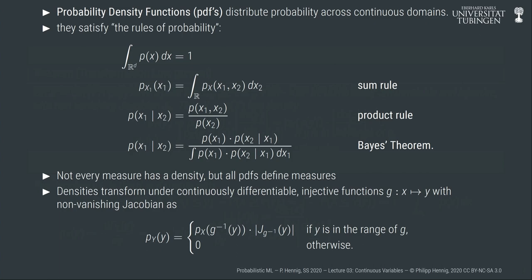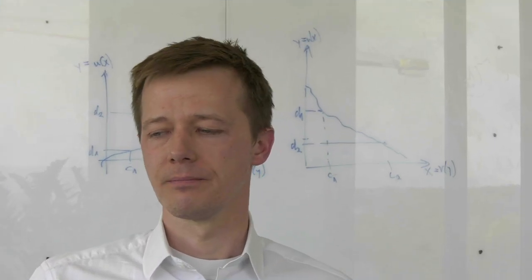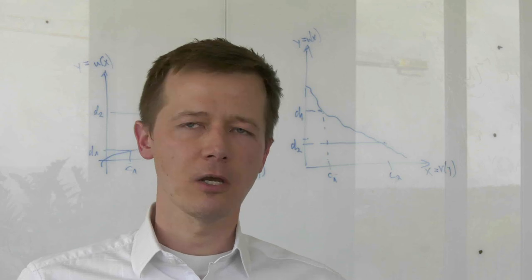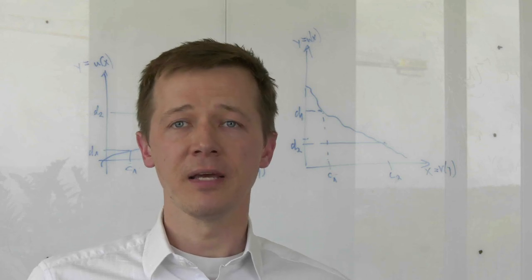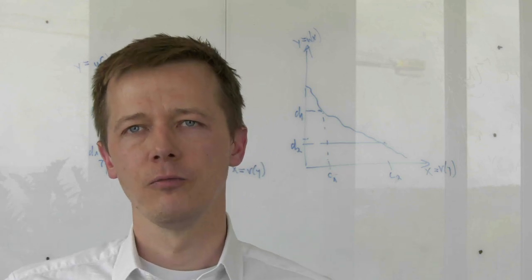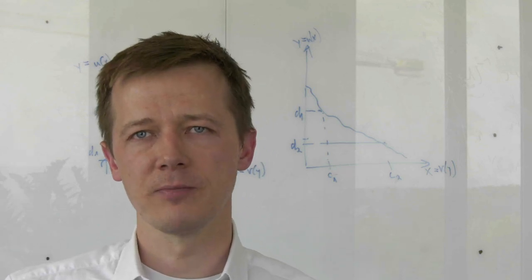The key things to remember: probability density functions are an important concept we'll use throughout; they distribute probability across continuous domains; not every measure has a density but all PDFs define measures; PDFs are non-negative integrable functions with integral one; they satisfy continuous analogues of the sum rule, product rule, and Bayes' theorem; and when you change variables — especially non-linearly — densities transform non-trivially via the Jacobian of the inverse transform. Let's take a quick break and then we'll do something much more fun: a real example.